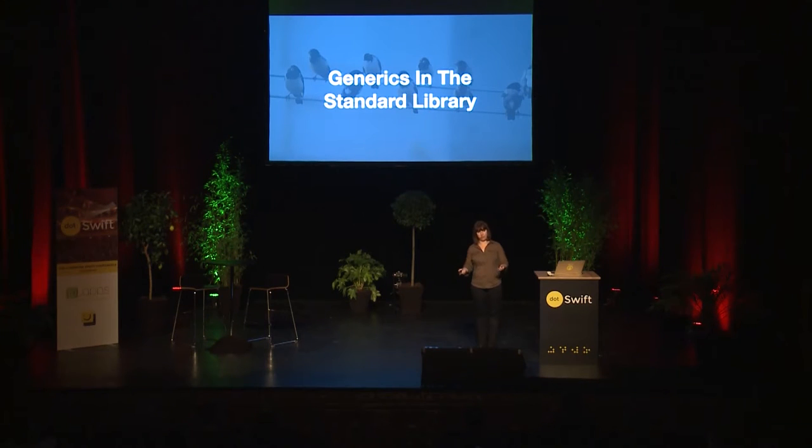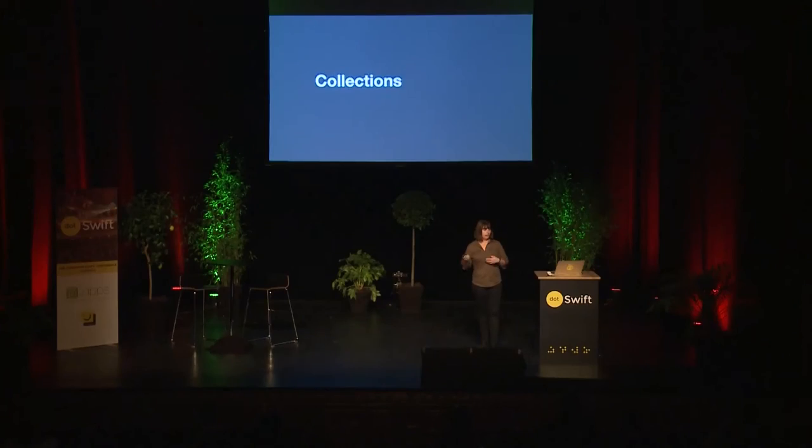Generics in the standard library — this is the really cool stuff, because the Swift standard library was the first place to actually be able to use generics. So it stands to reason that we can learn from the way that the standard library authors chose to use generics. First, I'm going to talk about collections: arrays, dictionaries, sets, all of those classes of items. They are one of the most commonly used generic types in Swift, and that's because they can hold anything. Collections don't care about what type of objects they contain.